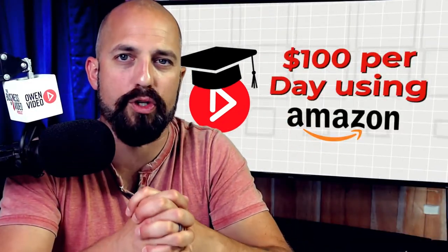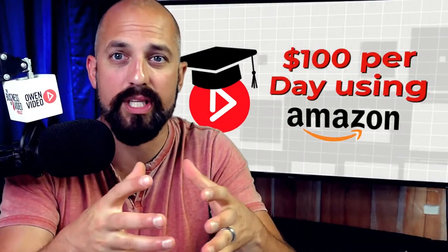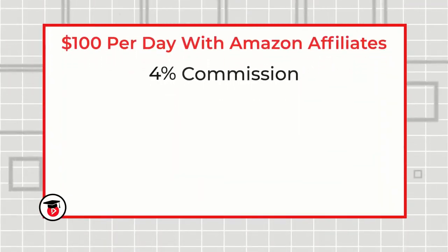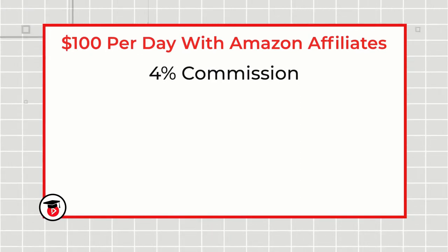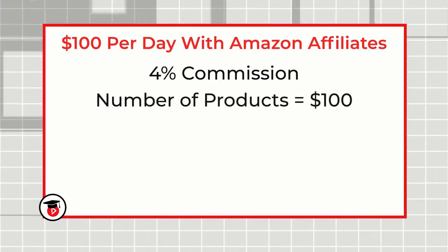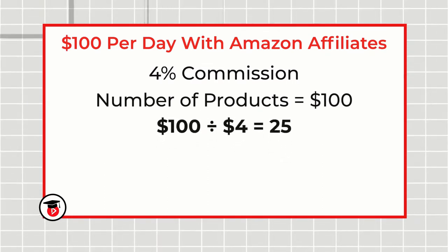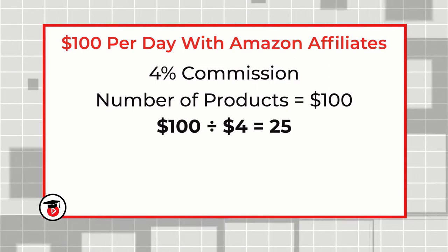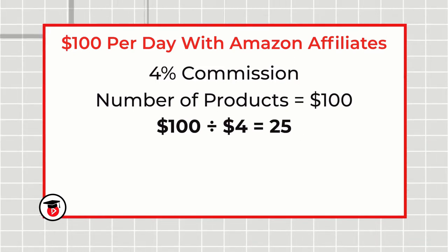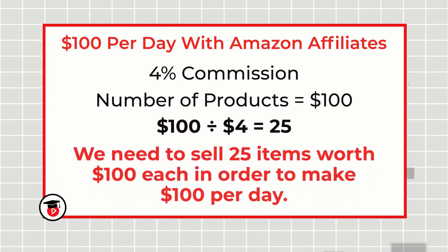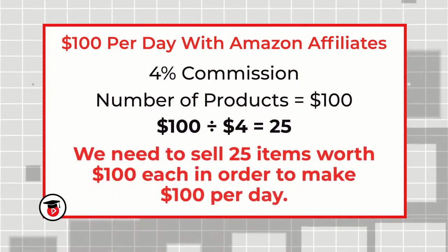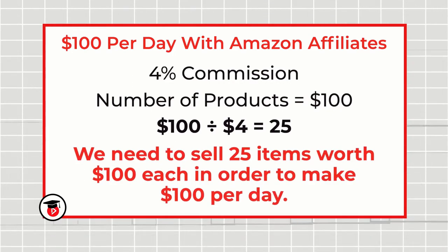So how do you make $100 per day? It comes down to that blueprint equation. At 4% commission, you need to figure out how many products you need to sell to equal $100 per day. We take $100 and divide it by $4, which gives us 25 — meaning we've got to sell 25 $100 items at 4% commission to make $100 per day on Amazon.